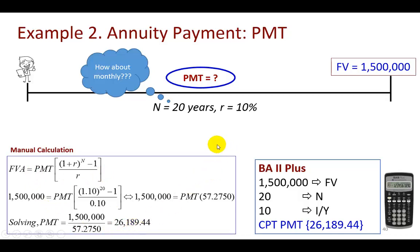And if you want it to be monthly, then this 20 again is going to be 240, and this 10 you divide it as shown, putting in $1.5 million as your future value and compute payments. No need to do it, you know what's up.